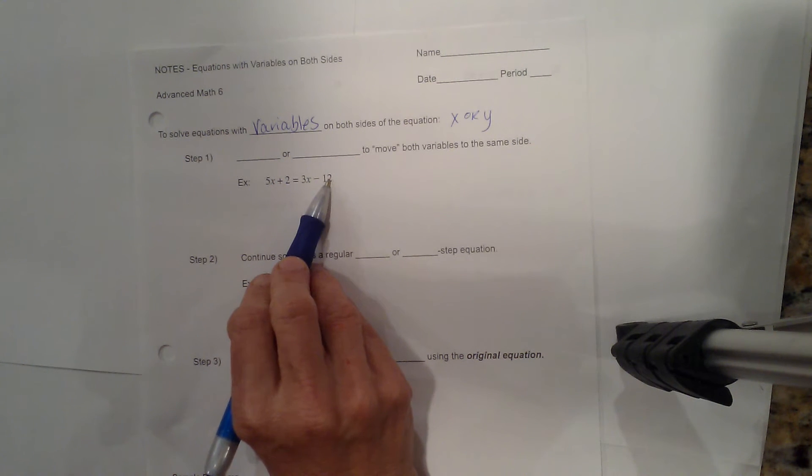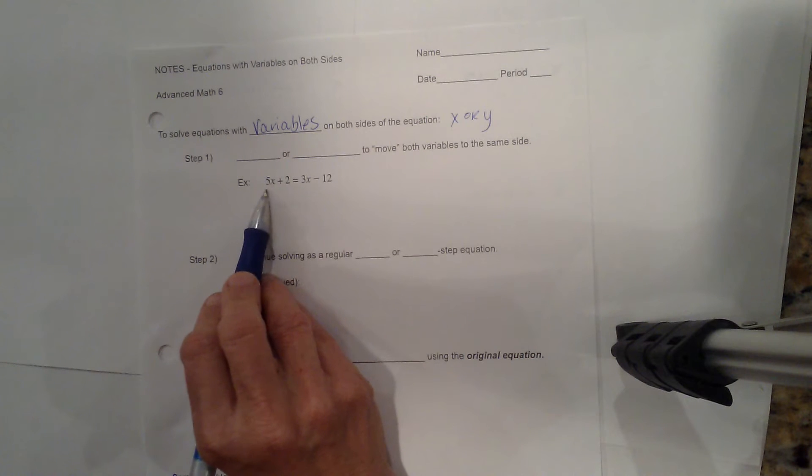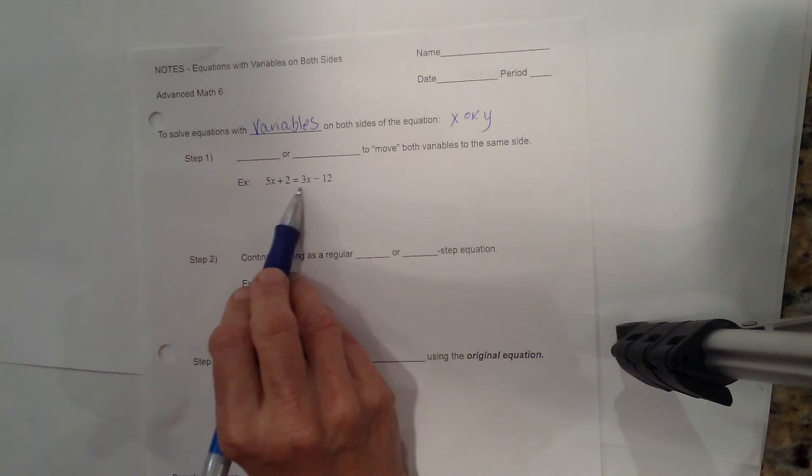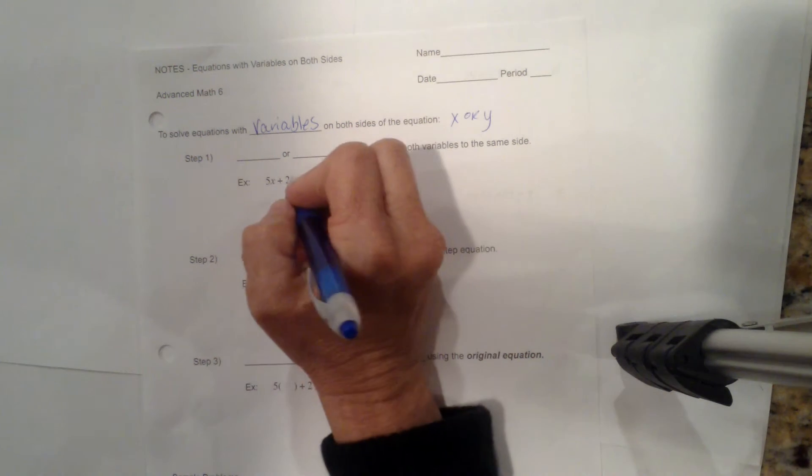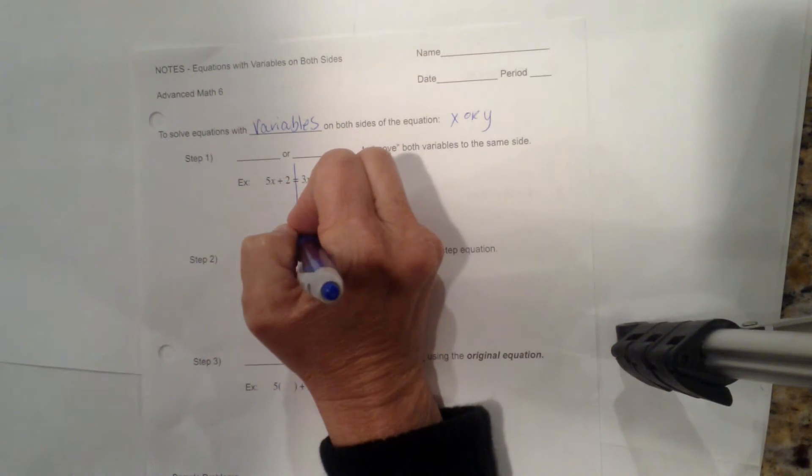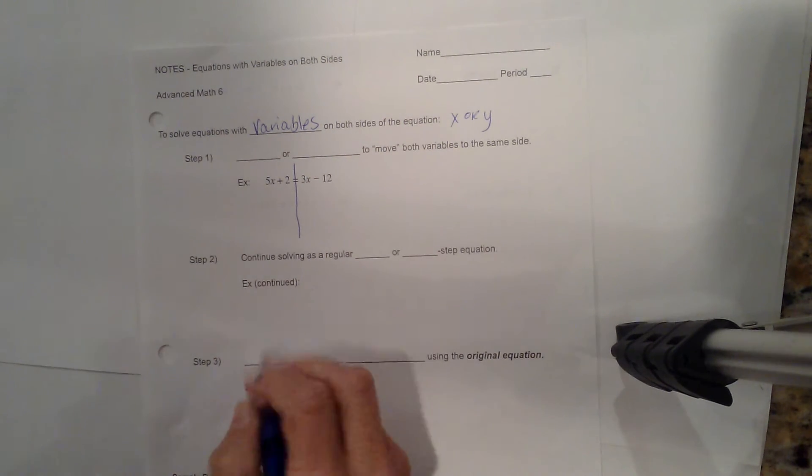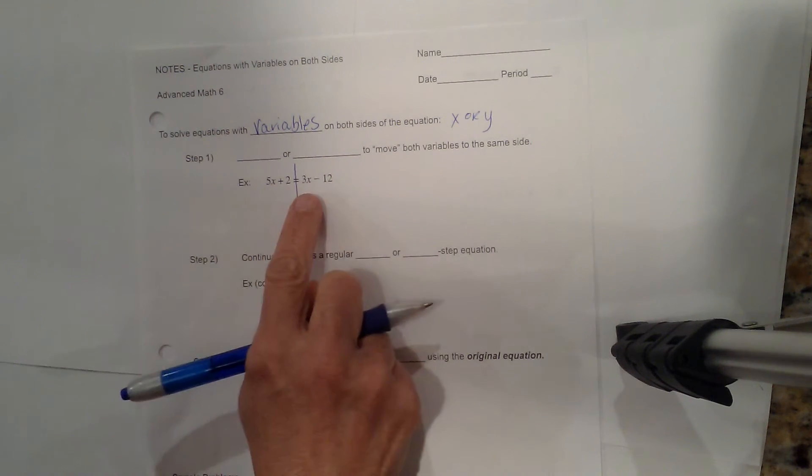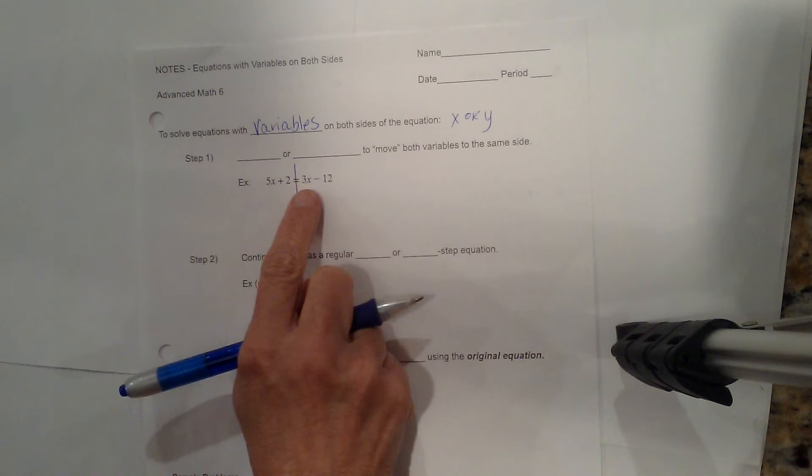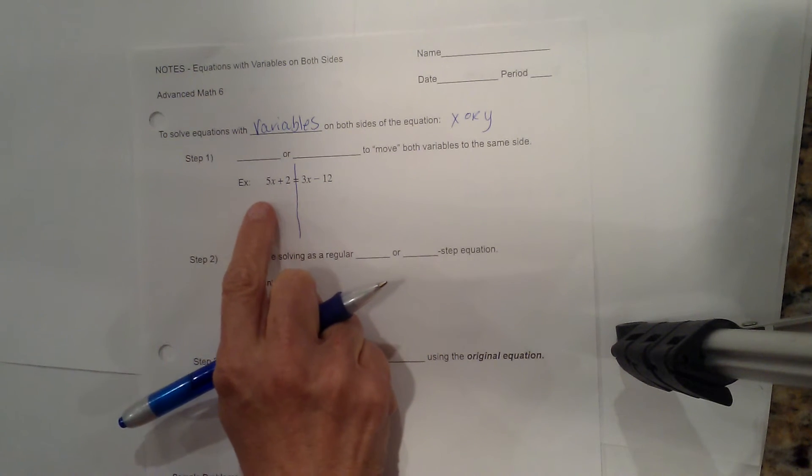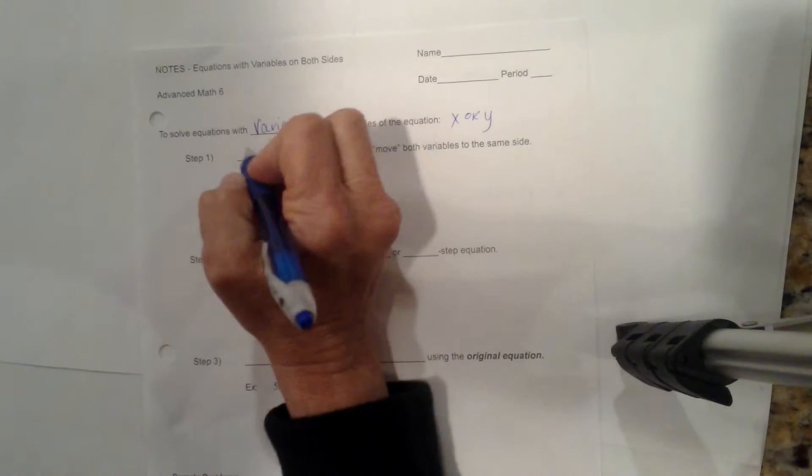To gather our variables which are 5x and 3x, we can either subtract 3x from both sides of the equation. So I actually like to draw a line right down my equal sign so I can see my two sides. So I can either subtract 3x from both sides or I can subtract 5x from both sides.